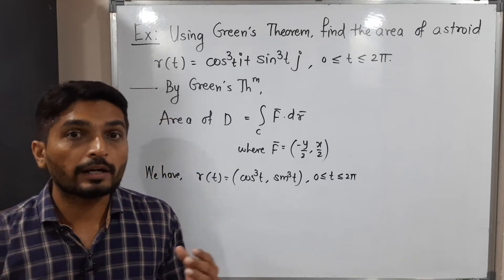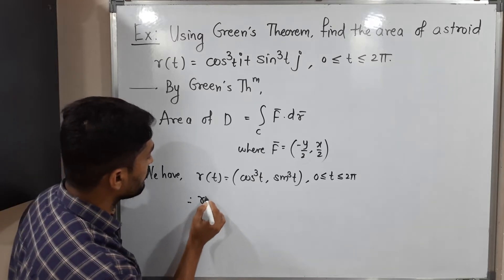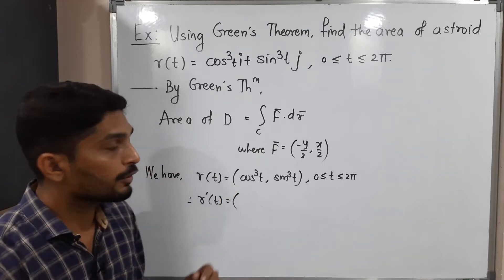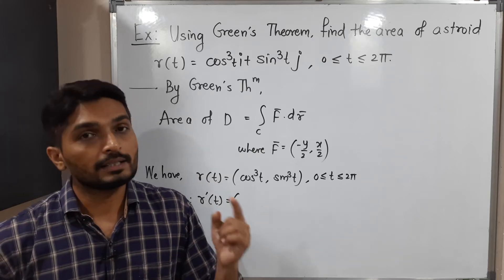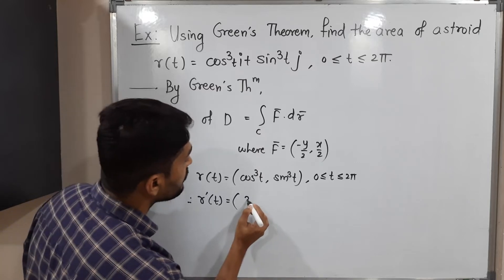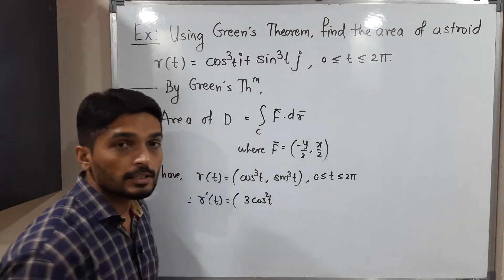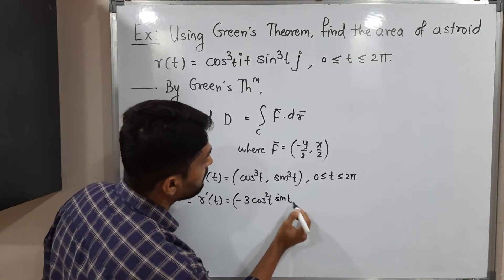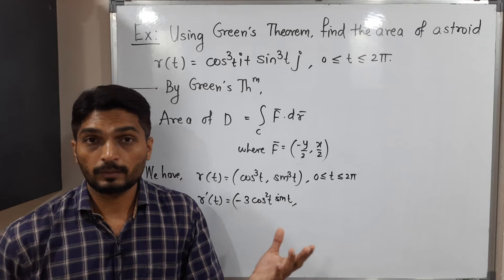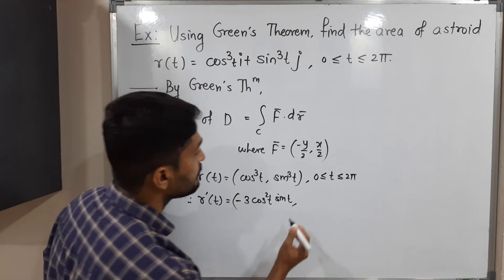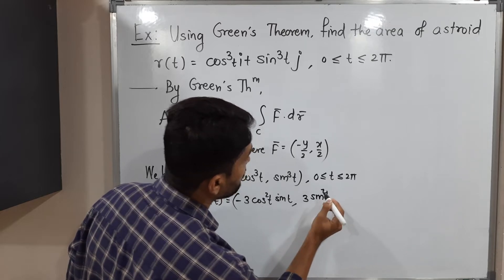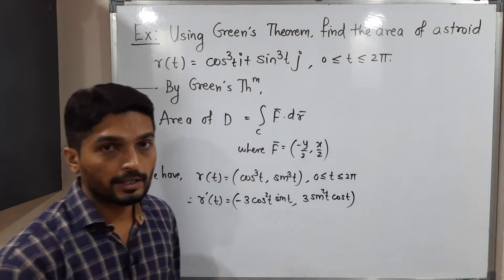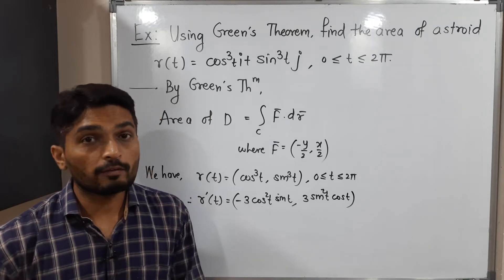We have r(t) and we want r'(t), so let us find the derivative component-wise. The derivative of cos³t: using the chain rule, derivative of x³ is 3x², so we get 3cos²t, and then times the derivative of cos which is −sin t, giving −3cos²t·sin t. Similarly, the derivative of sin³t is 3sin²t·cos t. So r'(t) = (−3cos²t·sin t, 3sin²t·cos t).